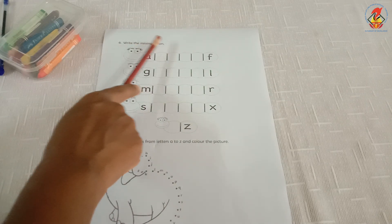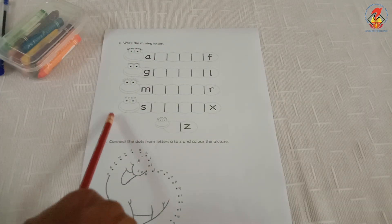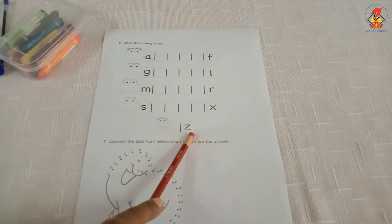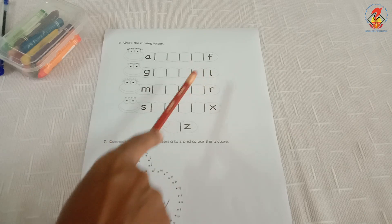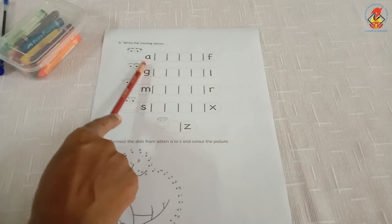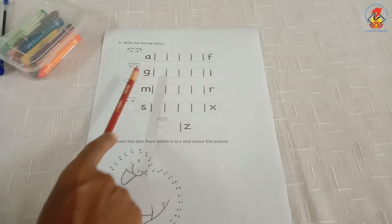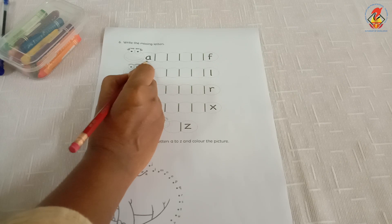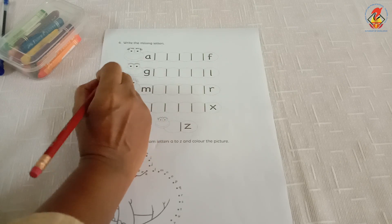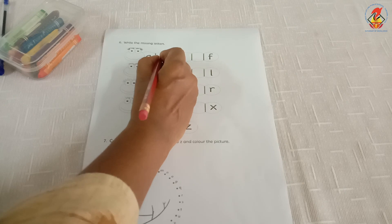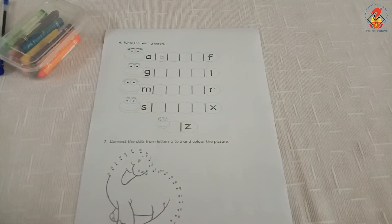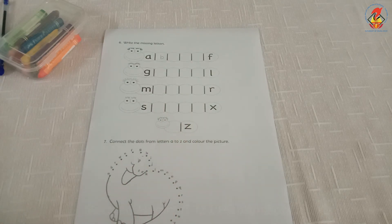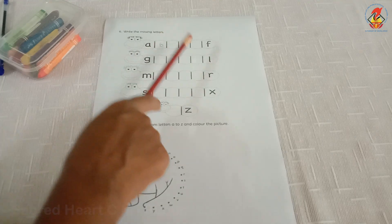Next question is, write the missing letters. Here you can see the letters from letter A to letter Z. In between, a few letters are missing. You have to find out and write the missing letters. Here, letter A. After letter A, which letter comes? Yes, letter B. So, likewise, you have to fill the missing letters. When you write, say and write.